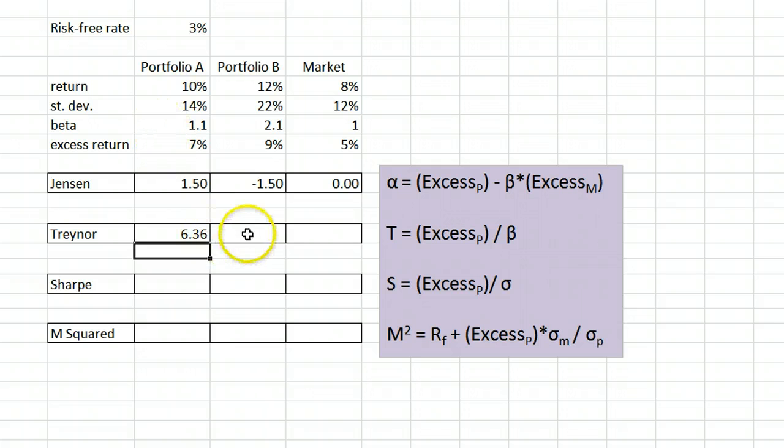For portfolio B, it is 9 divided by 2.1 and for the market, it is 5 divided by 1.